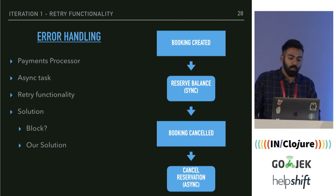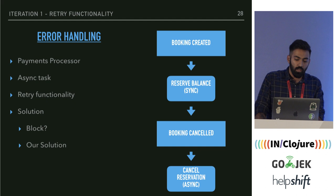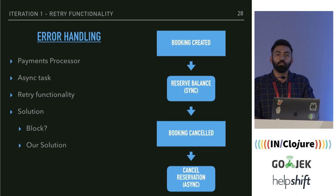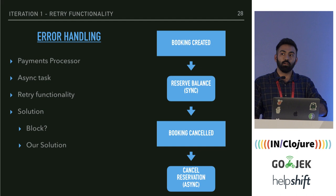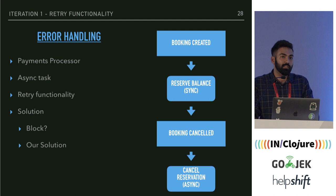A problem came up when we wanted to create a service called Payments Processor. Whenever a booking is created, if the customer is paying via GoPay, we reserve that balance so he doesn't spend it during the trip. Whenever a booking is cancelled, you want to reverse that balance and give it back to the customer. Initially that was done by Ride Service. This is an async task so we can pull it out.